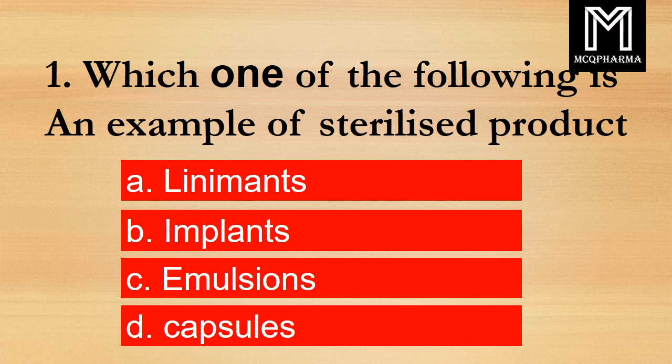Question number 1. Which one of the following is an example of a sterilized product? Option A: Linaments. B: Implants. C: Emulsions. D: Capsules. Correct answer: Option B, Implants.